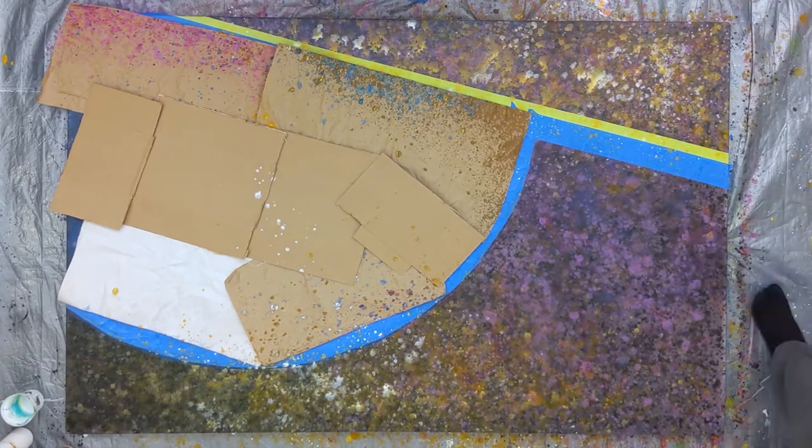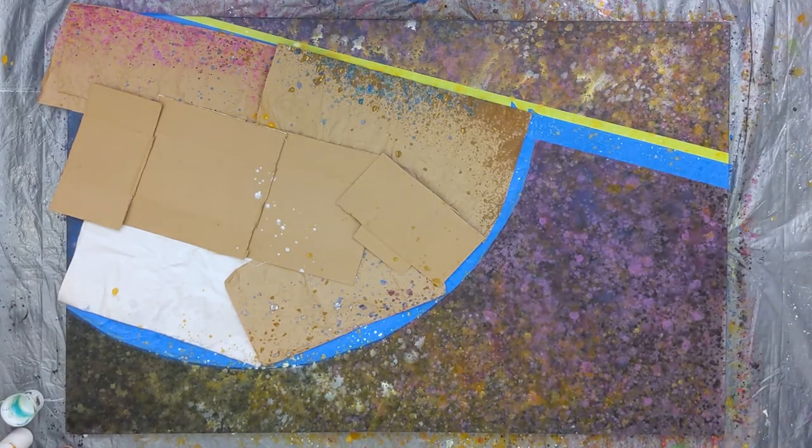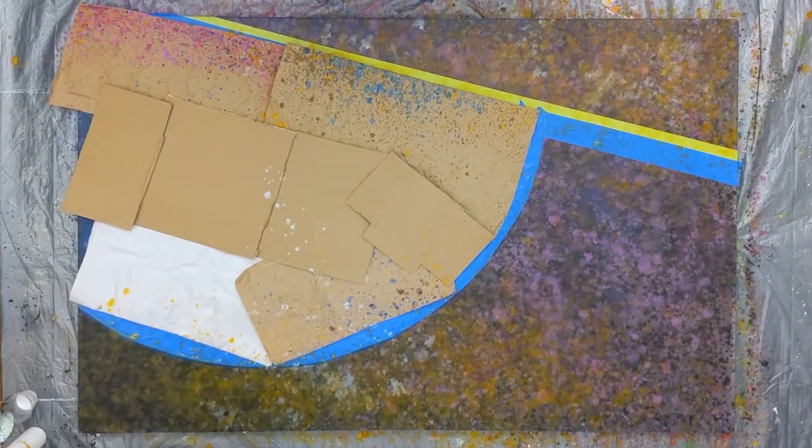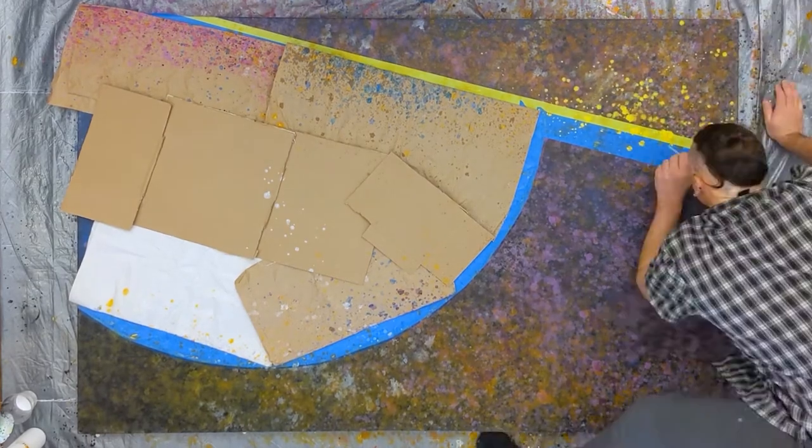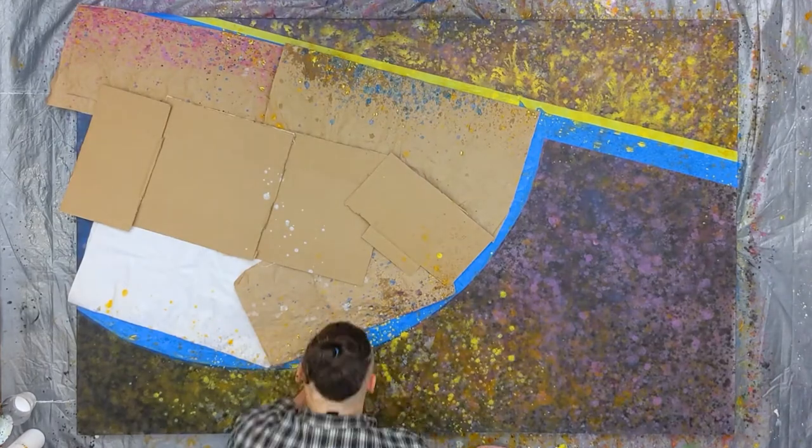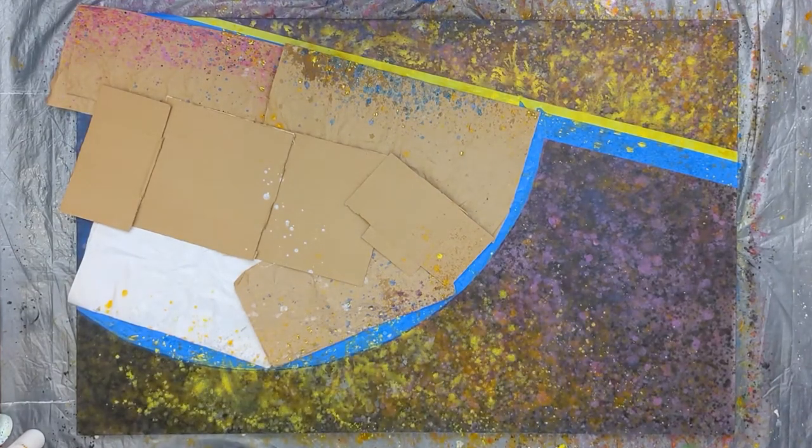This will provide some contrast in the piece before the figure and planets are added. This wouldn't be a space painting without planets, right? For the first time in this piece, I use a straw to move the paint in a flourished manner. I love how organic the paint looks when I do this.